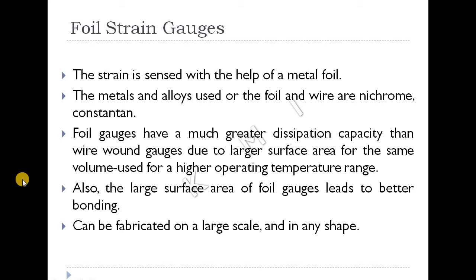Nichrome and constantan are the materials used. Foil gauges have a much greater dissipation capacity than wire wound gauges. Metal foil strain gauges have a large surface area on the wall surface, providing much greater dissipation capacity.